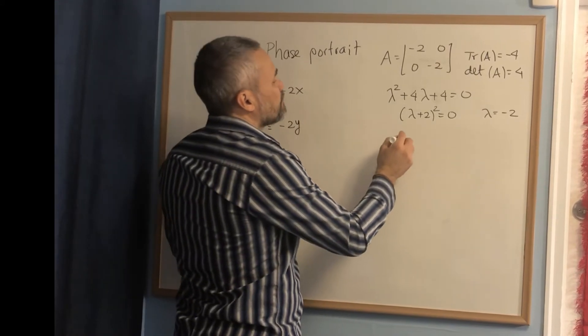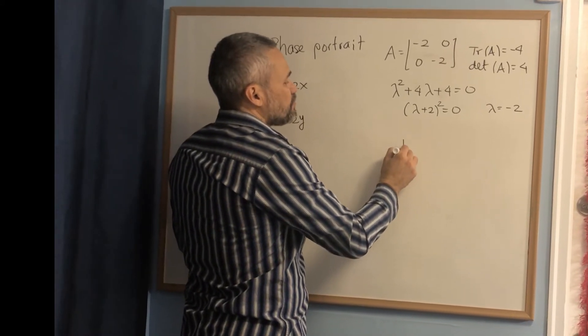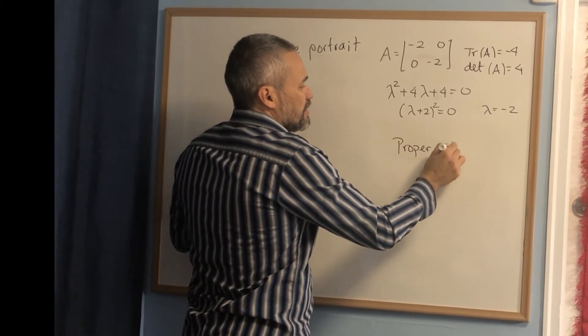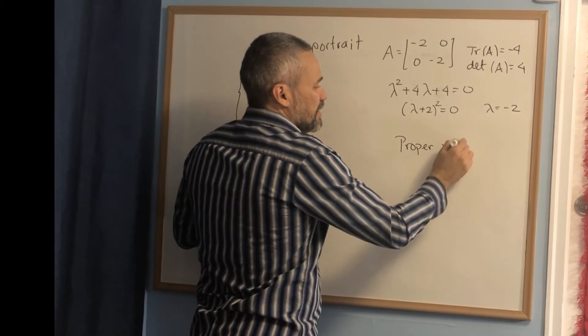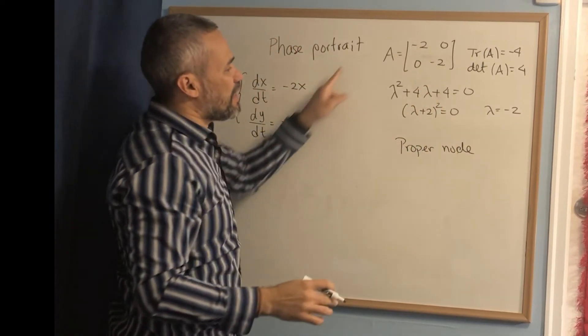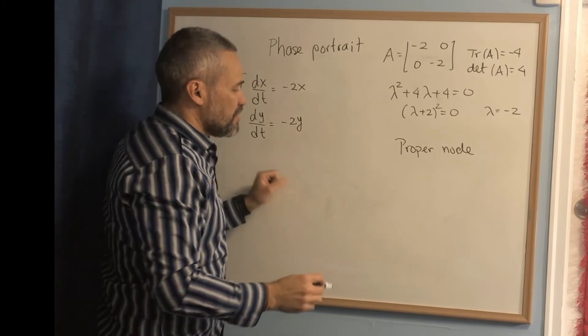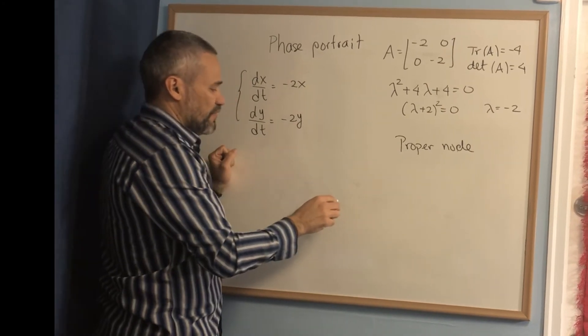In this case, we have a proper node. And the reason is that when the matrix is diagonal and we only have one eigenvalue, then the phase portrait is going to be very easy.